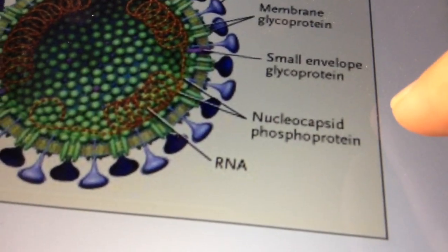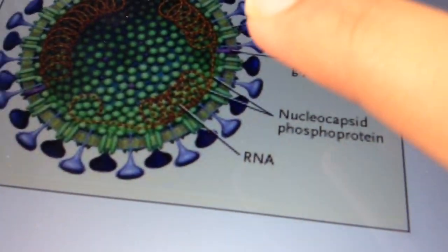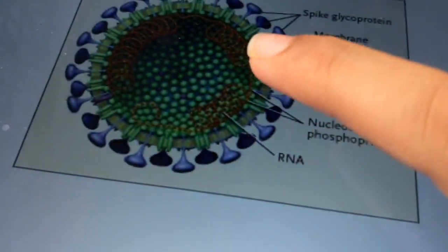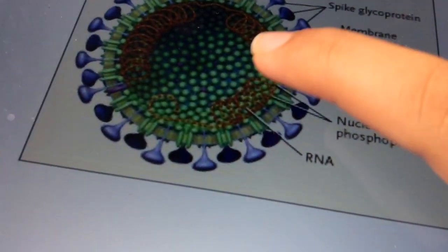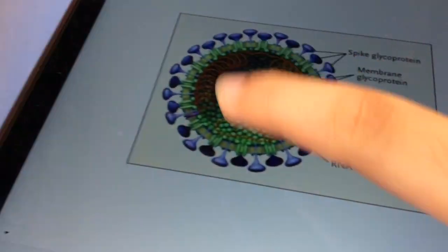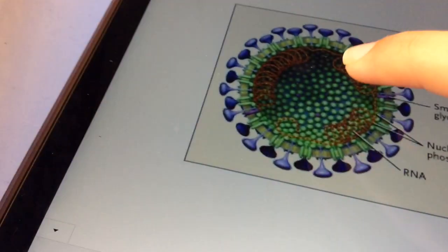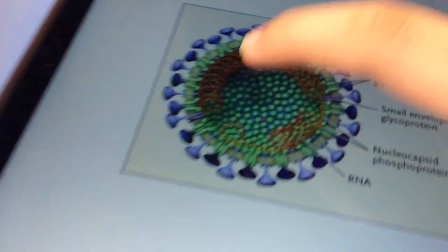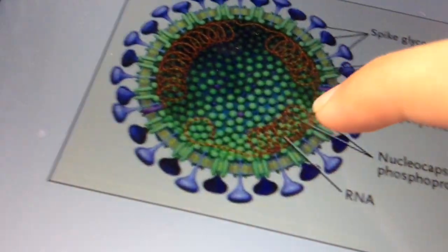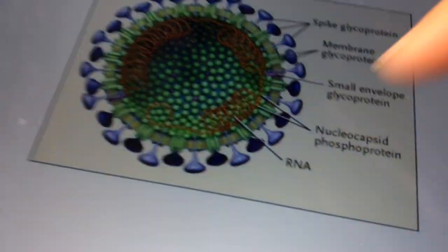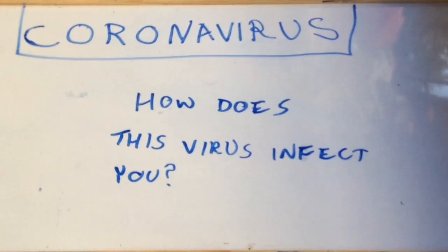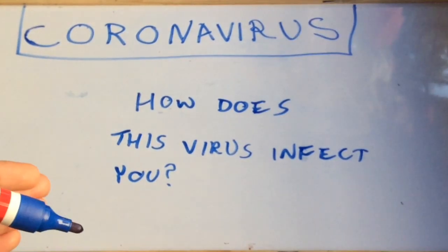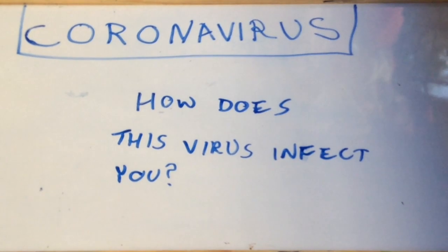Then we have the nucleocapsid phosphoproteins, and the genetic material is also present. Can you see these red coils? That is the RNA. The next question we must ask ourselves is: how does the virus infect you?